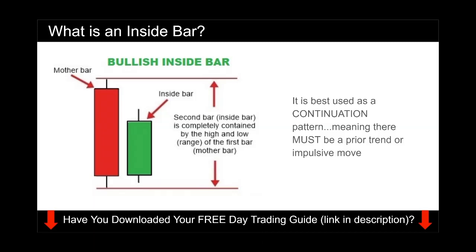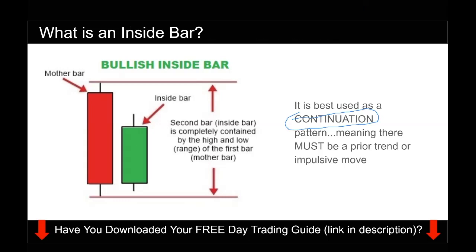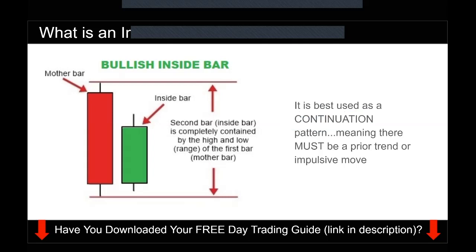An inside bar is best used when there is already a trend — a prior trend or an impulsive move. It is meant to be used as a continuation pattern. We want to use this in a trending market, not a ranging market. Because this is a continuation pattern, price has already moved strongly in one direction, it starts consolidating, and you're trying to catch the next move. Do not blindly apply this strategy to every single inside bar you see — that will blow your account.